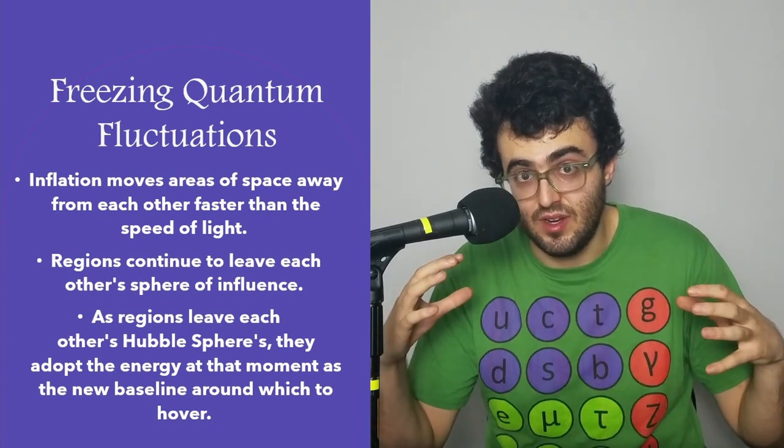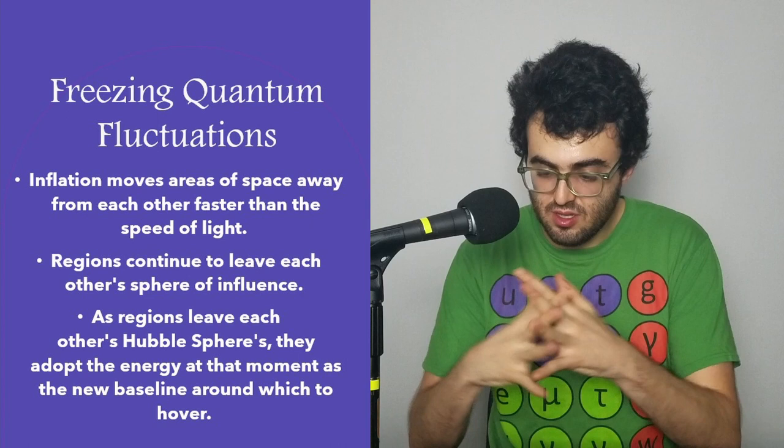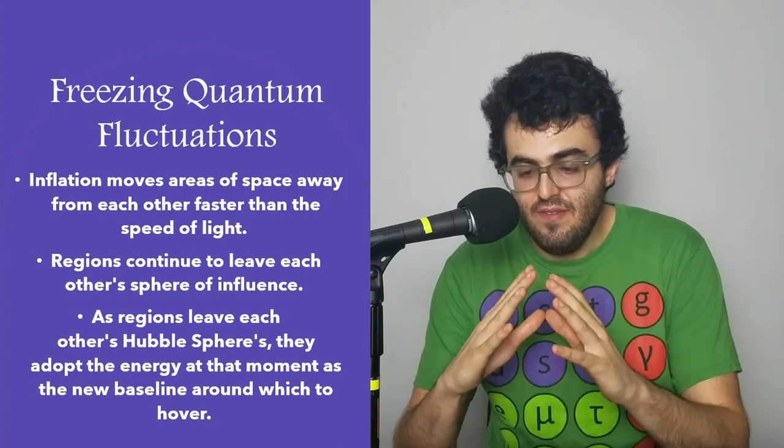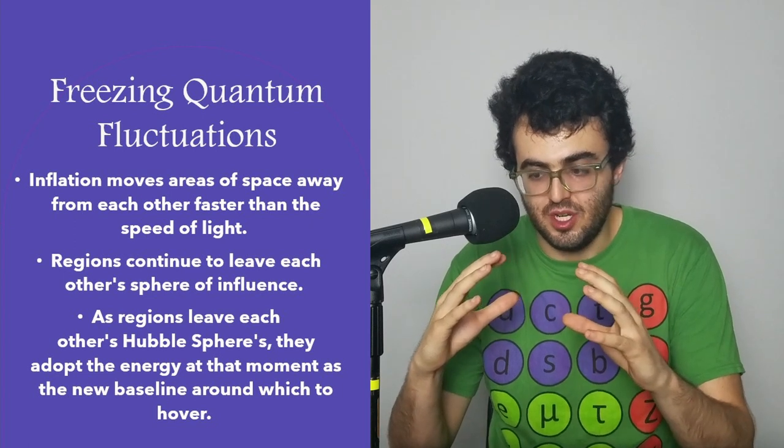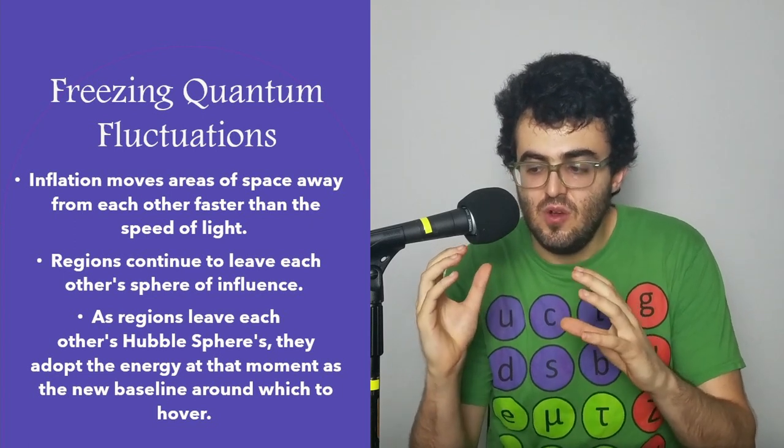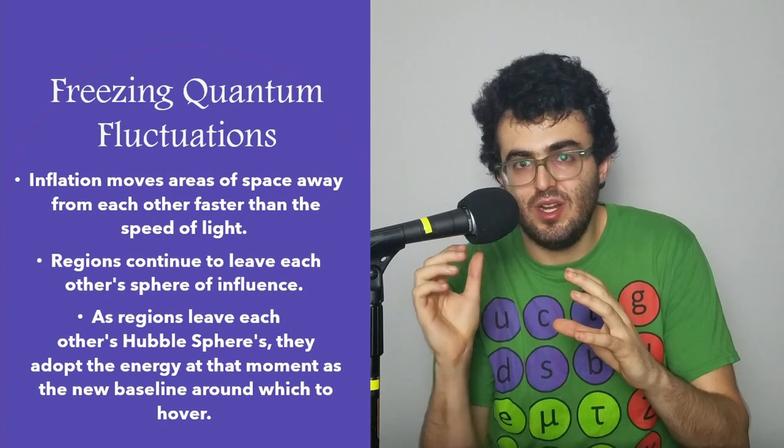They're being taken out of the realm of interaction, or the technical term, taken out of the Hubble sphere, taken out of the realm of causal connectivity. And what happens is that if there's a quantum fluctuation as one region is leaving the other region, this new region will have a new sense of what its baseline is.